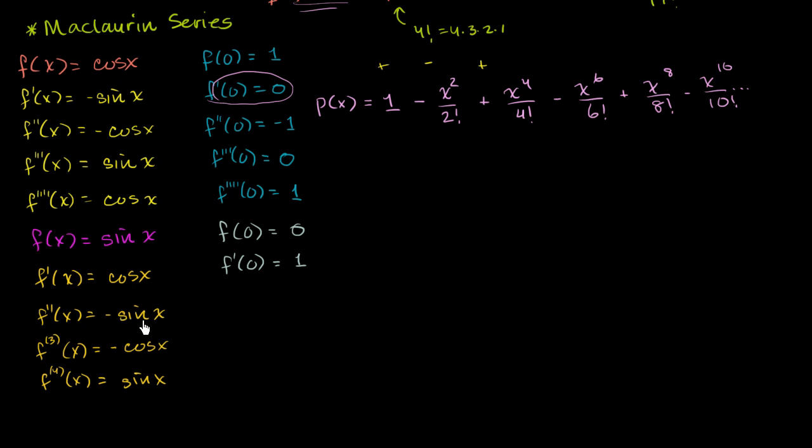Negative sine of 0 is going to be 0. So f prime prime, the second derivative evaluated at 0 is 0. The third derivative evaluated at 0 is negative 1. Cosine of 0 is 1. You have a negative out there, it is negative 1. And then the fourth derivative, evaluated at 0, is going to be 0 again.